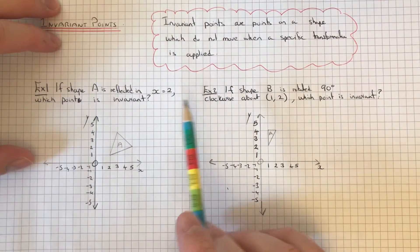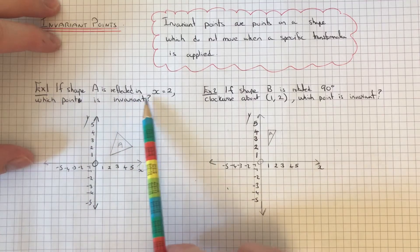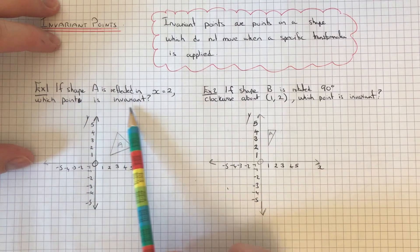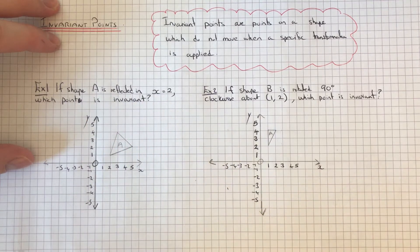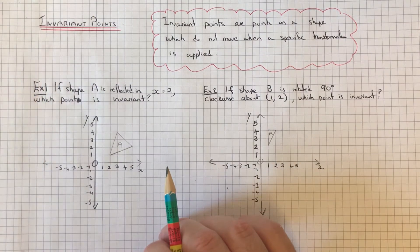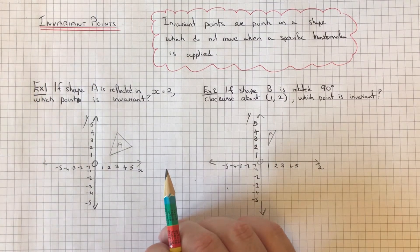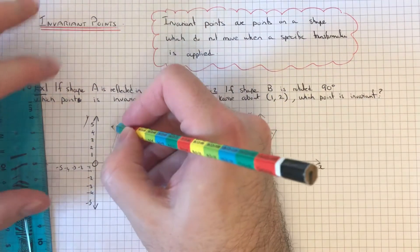a look at the two examples here. If shape A is reflected in x equals 2, which point is invariant? First of all, carry out the transformation. Reflect the shape in the mirror line x